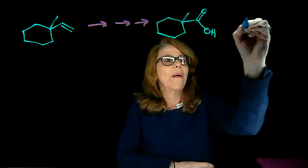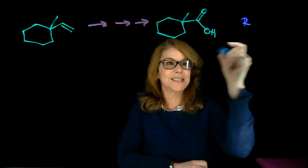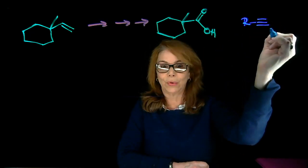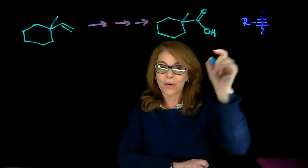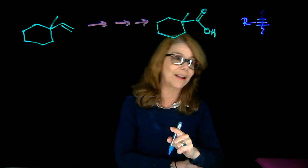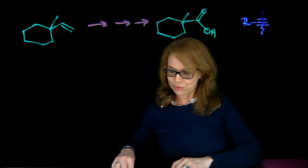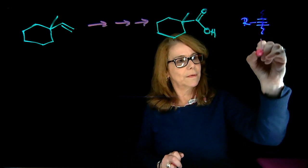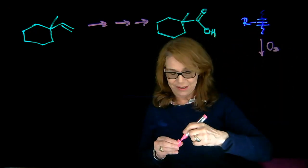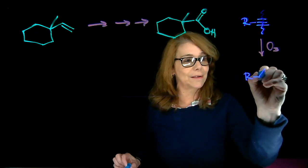If you remember, we can remove one carbon atom and make a carboxylic acid if we perform ozonolysis of a terminal alkyne. So I'm going backwards, analyzing how I can get that carboxylic acid. If I have a terminal alkyne and I do ozonolysis, I'm going to chop that, and one of the molecules I'm getting is a carboxylic acid.